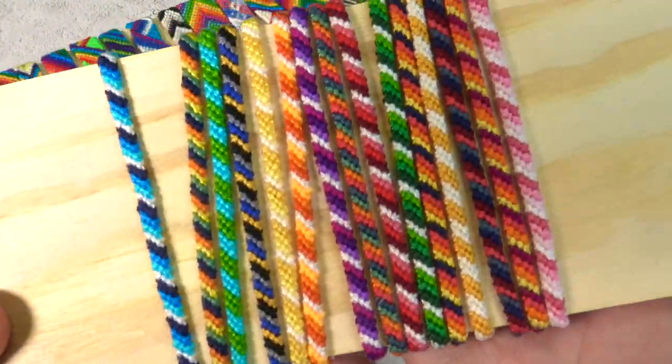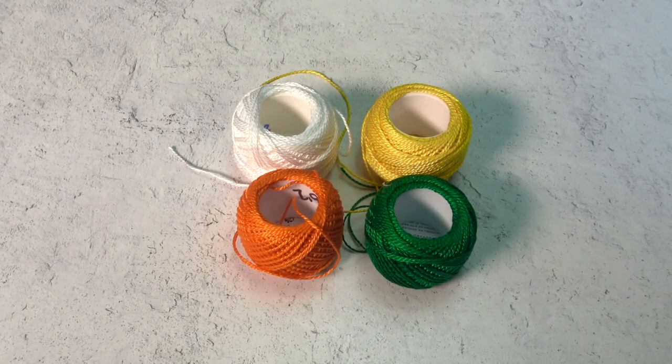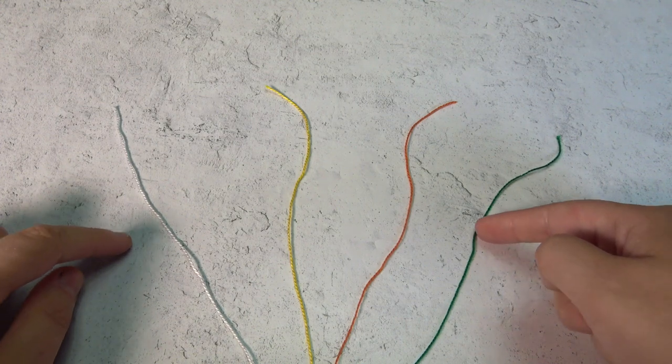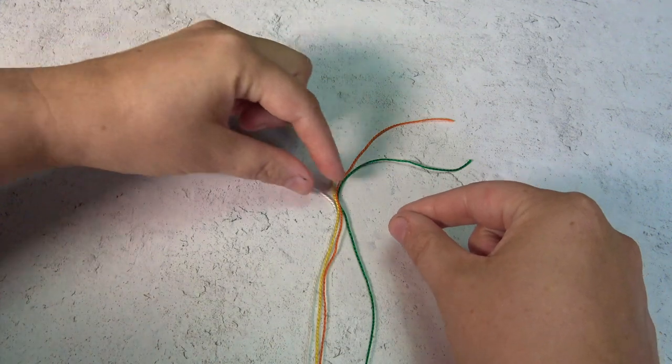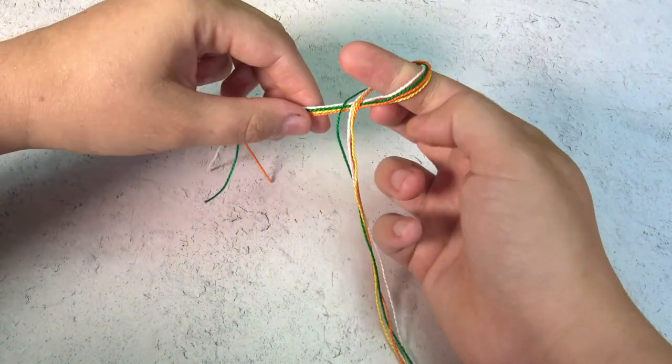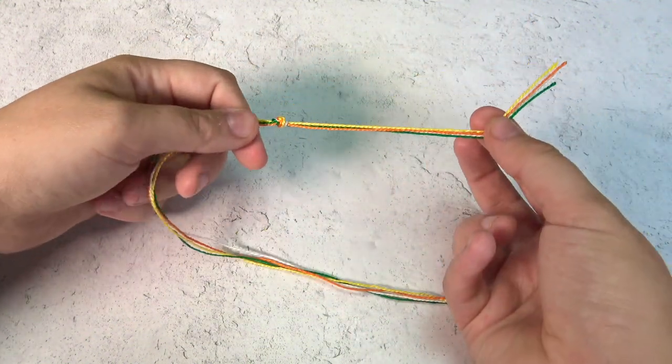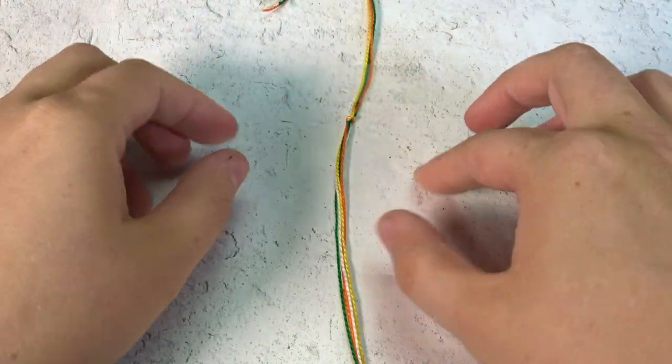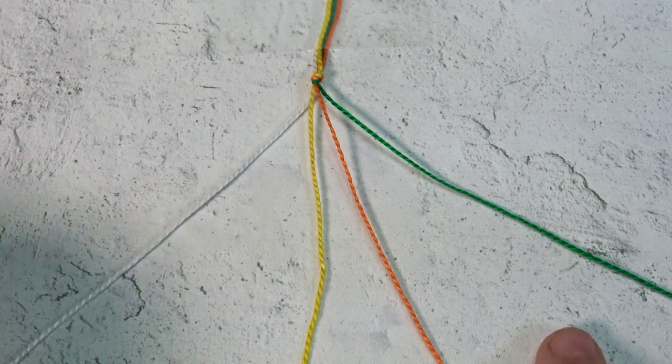And in this video, the most basic friendship bracelet. To get started, you need four colors. Cut about four feet of string. You want it to be longer rather than shorter. Then we tie a knot two inches to three inches from the top and tape it to the table.